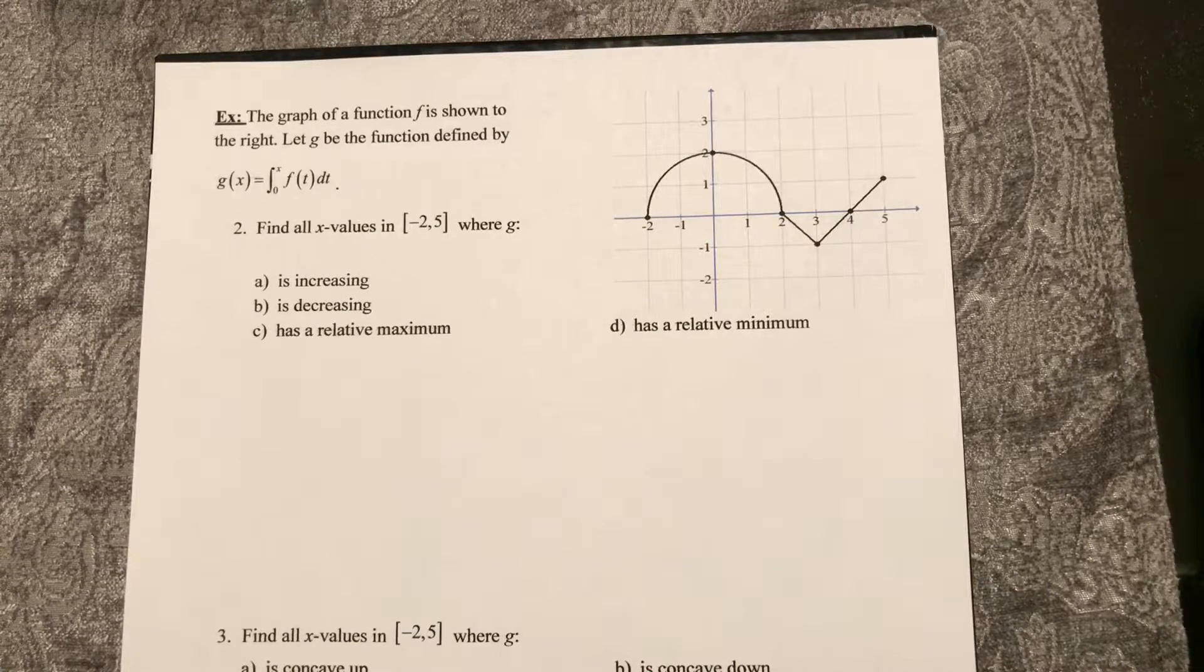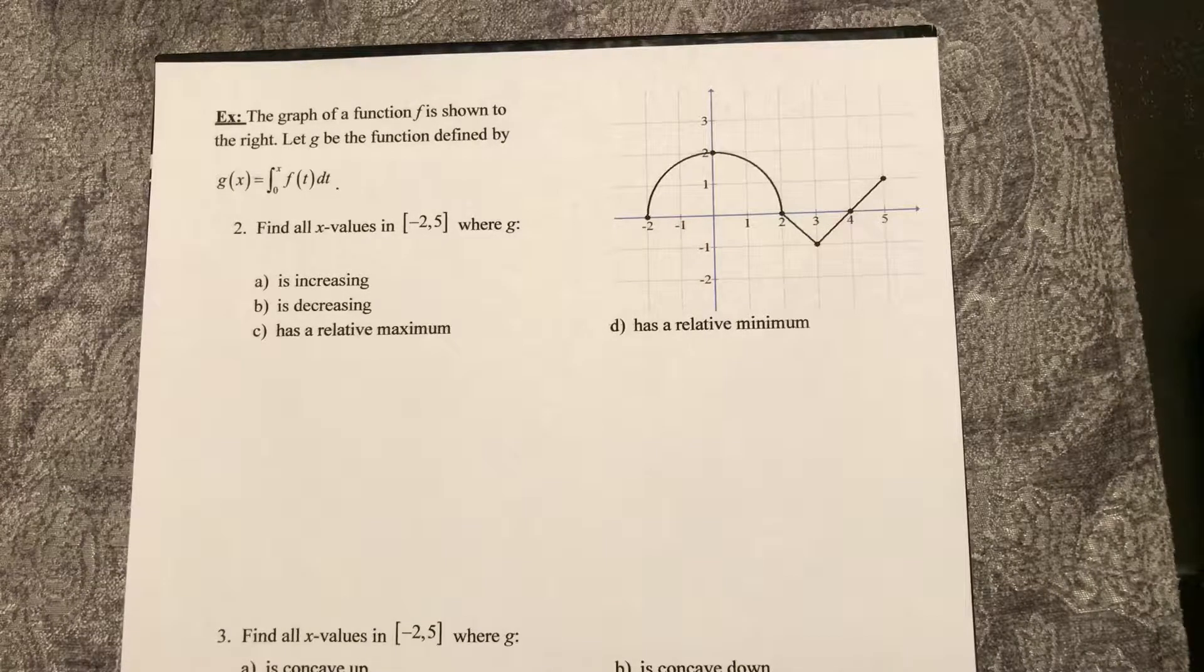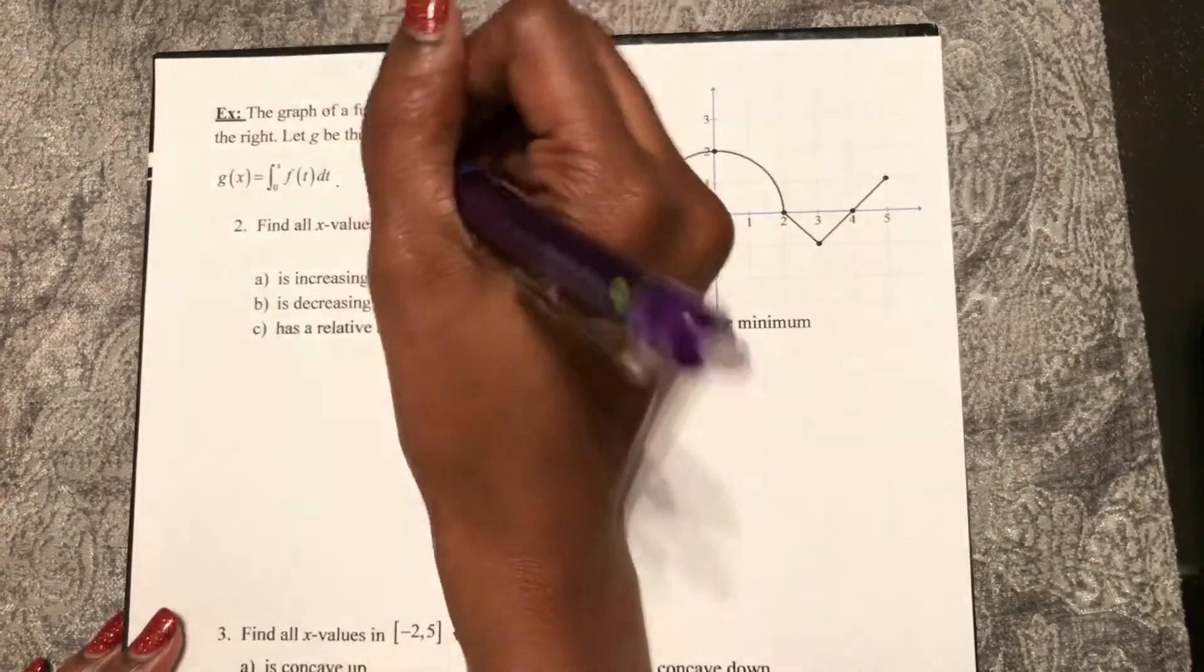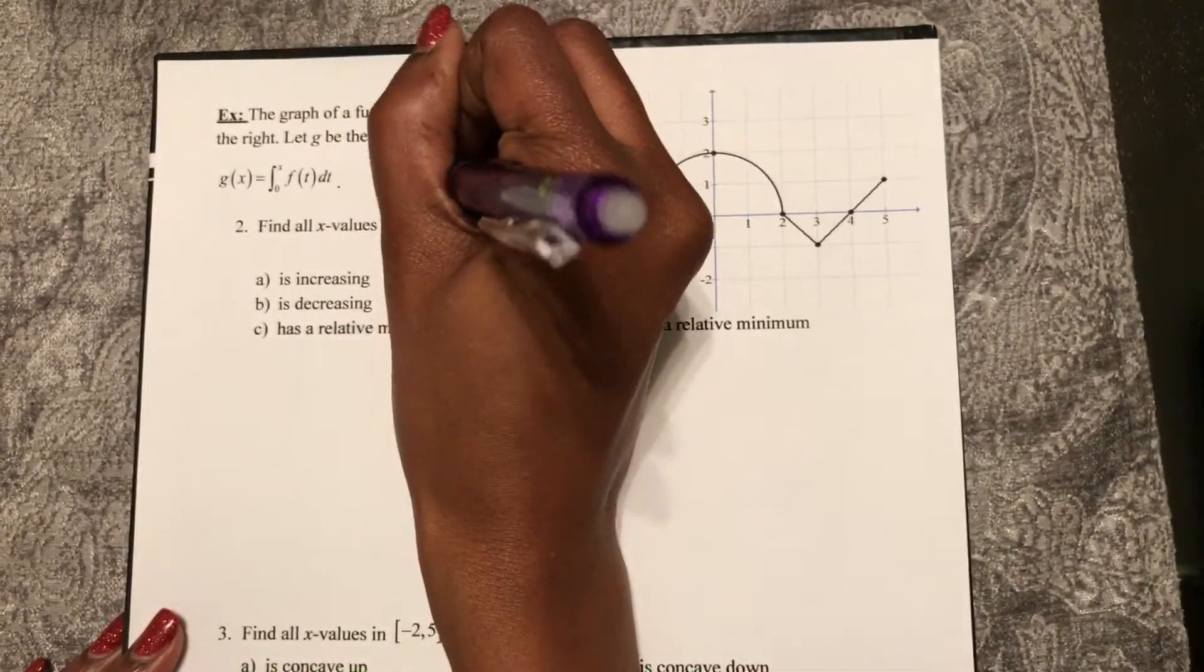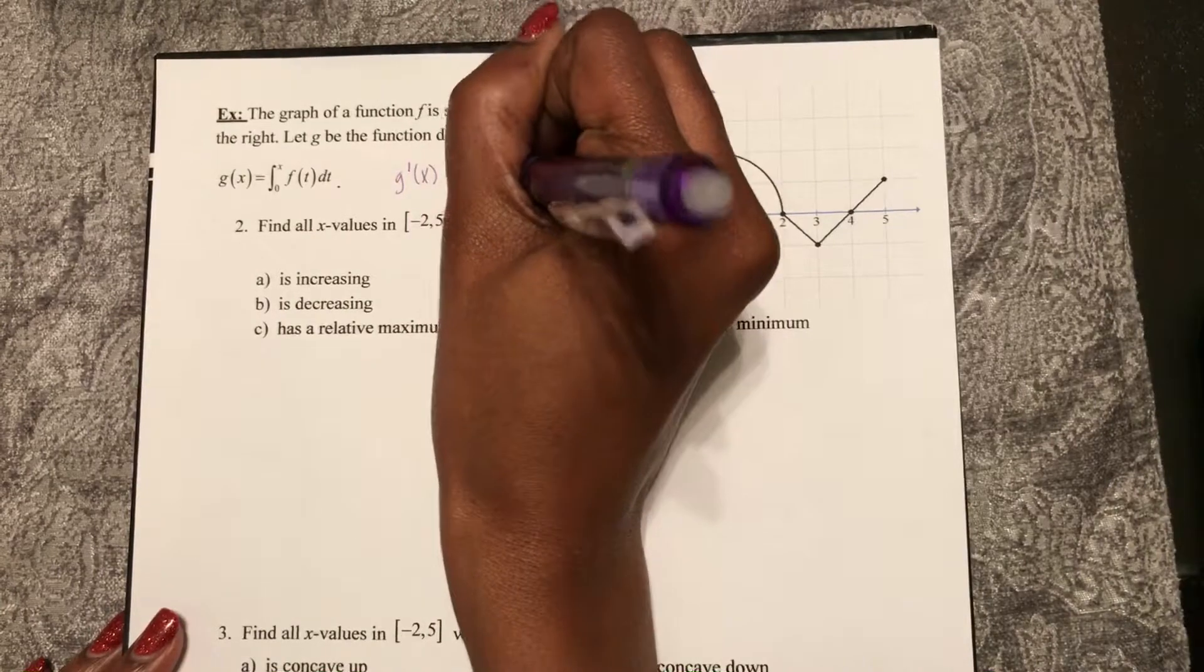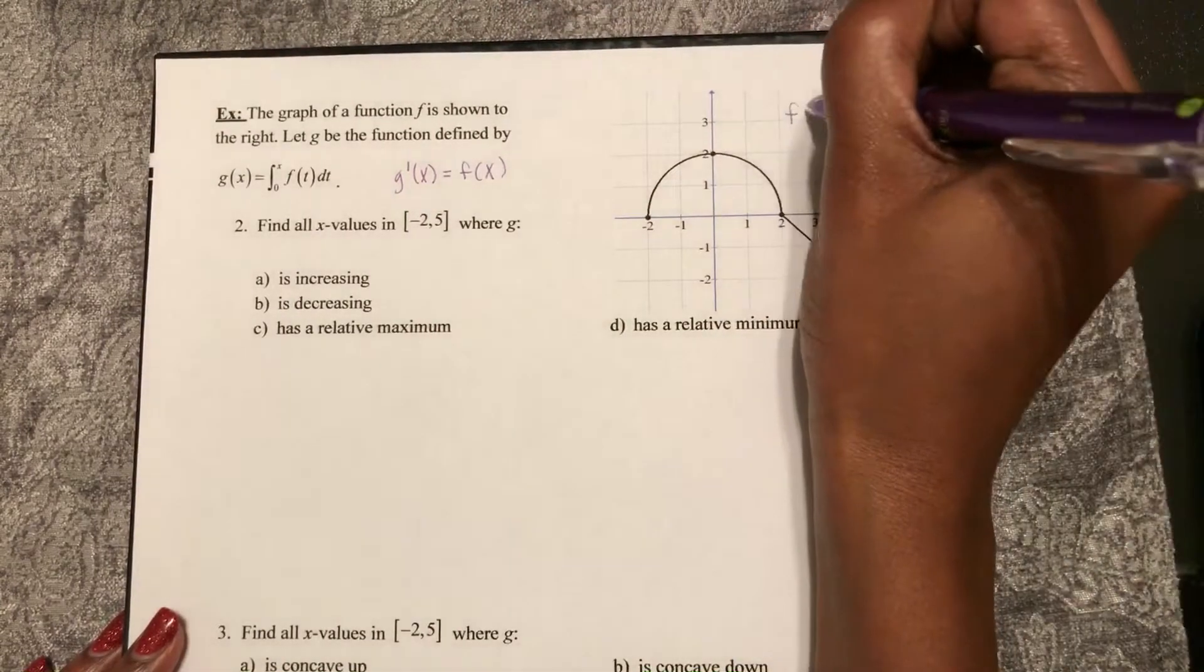So if I am going to look for intervals of increase and decrease, I need to find g prime of x. Remember g prime of x is going to be f of x. This is f here.